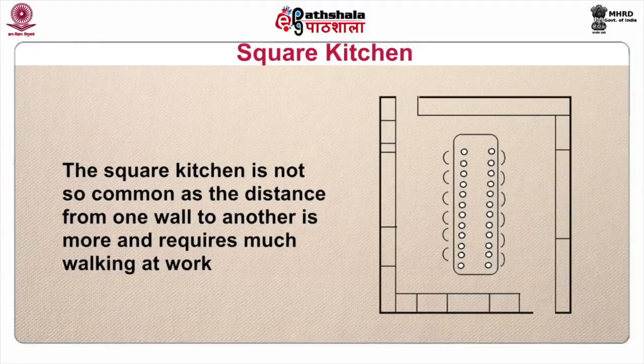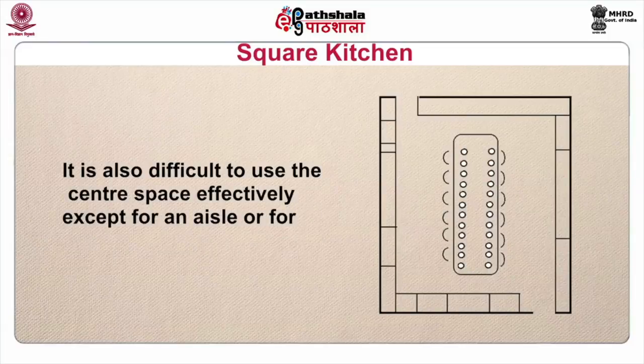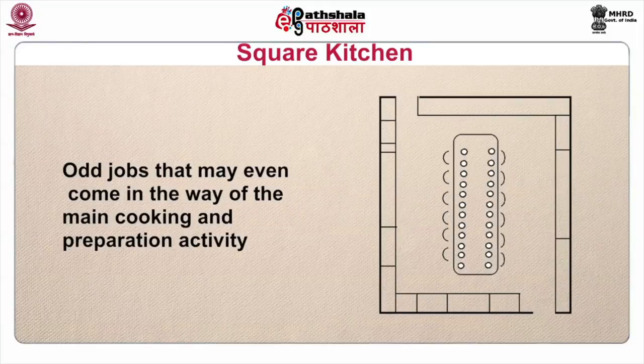The square kitchen is not so common as the distance from one wall to another is more and requires much walking at work. It is also difficult to use the center space effectively. All plumbing, electricity and gas connections are best brought to wall ends rather than having pipes and drains under floors in the center of the kitchen, as any leaks would flood the center making it unhygienic, unsafe and difficult to work in.